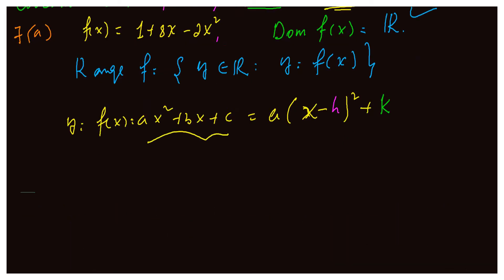It is a certain quadratic expression. By completing the square method, we will have these numbers h and k, which is called the turning point of our function's graph.